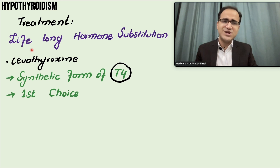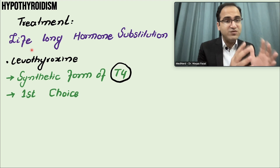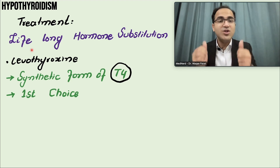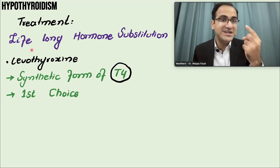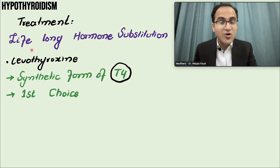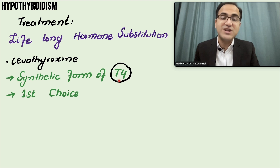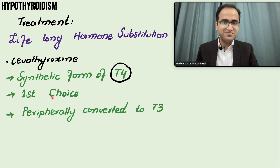In hypothyroidism there is thyroid hormone deficiency, so you have to replace the thyroid hormones. There are two types of thyroid hormone: T3 and T4. Normally levothyroxine, which is a synthetic form of T4, is used for replacement. It is the first-choice therapy for the treatment of hypothyroidism.